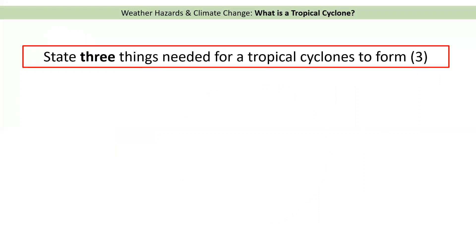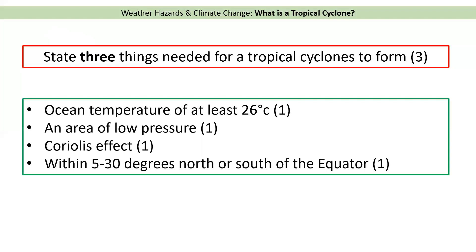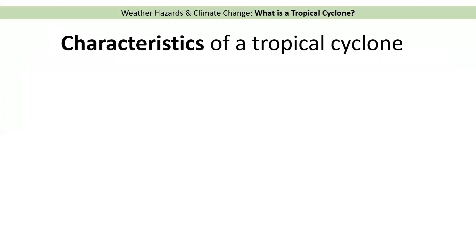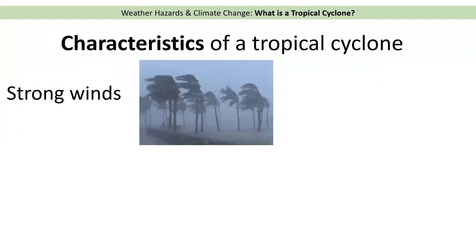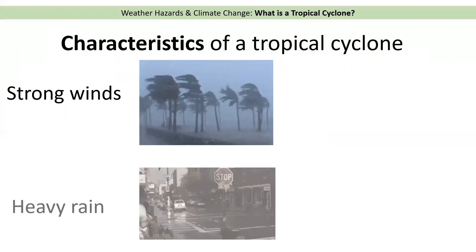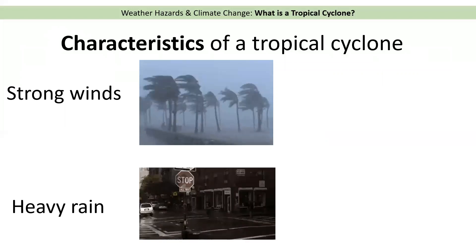So three things we needed for a tropical cyclone to form: you could have had any of the following — an ocean temperature of 26 degrees or higher, an area of low pressure, the Coriolis effect, and approximately 5 to 30 degrees north or south of the equator. Moving on to characteristics of a tropical cyclone — that simply means what is it like — there are two: very strong winds of at least 74 miles per hour, and very heavy rain.